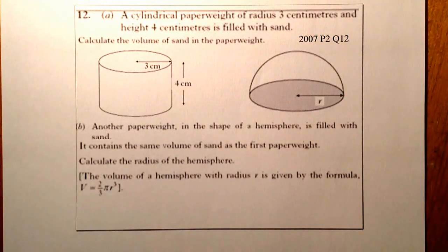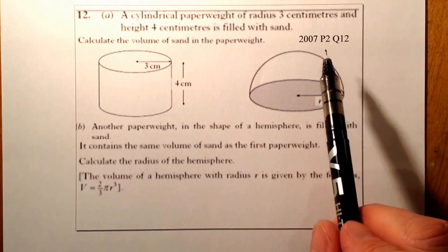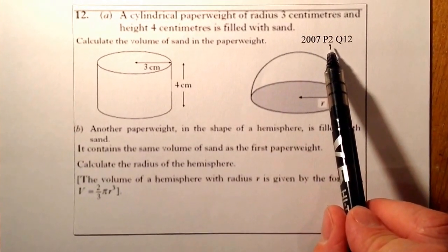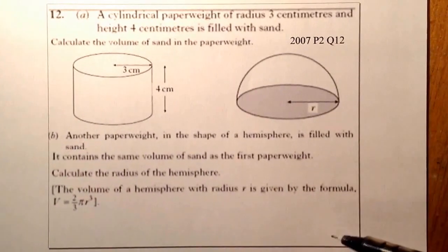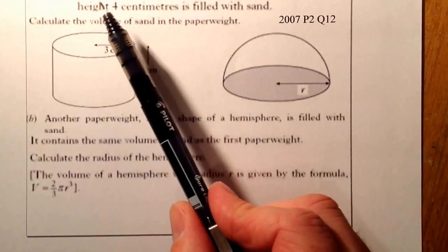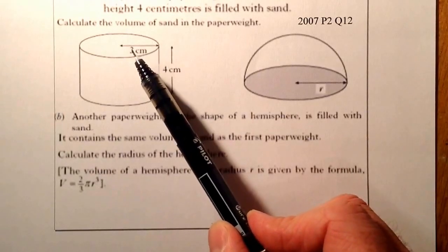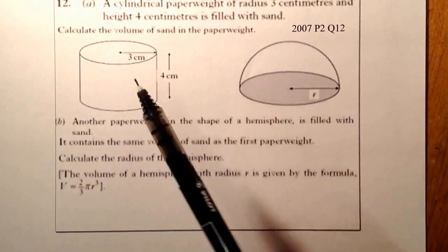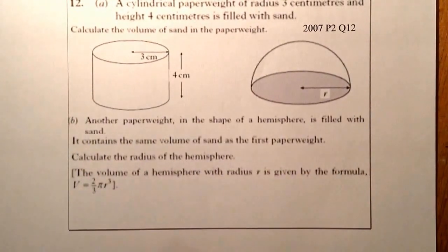This is National 5 Homework, question 12 from the Standard Grade Credit paper 2007. It's a paper 2, so it's a calculator question. We've got a cylindrical paperweight of radius 3cm and height 4cm filled with sand. Calculate the volume of sand in the paperweight.